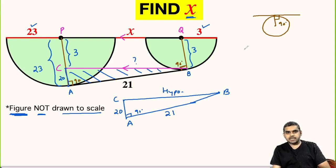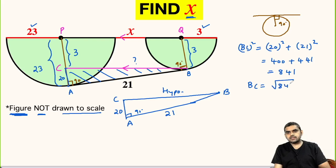So let us apply Pythagorean theorem here. Hypotenuse squared, that is BC squared, is equal to 20 squared plus 21 squared. So this will be 400 plus 441. So BC will be square root of 841, that is 29 units.